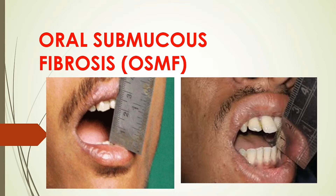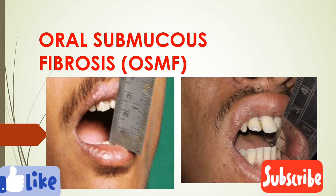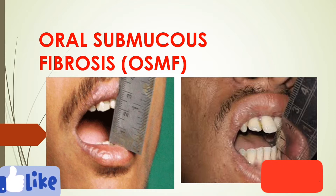Today we are going to talk about oral submucous fibrosis (OSMF). This is a condition where the soft tissue of the oral cavity becomes stiff and the mouth opening is gradually reduced due to stiffness. As a result, there is difficulty in opening the mouth, eating, or chewing. In this video we'll be talking about its clinical features, histological features, causes, and treatment.